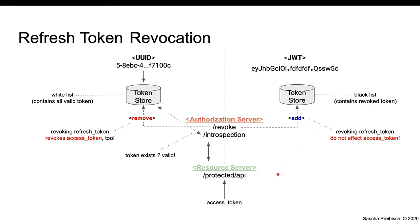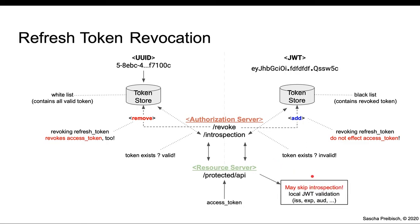Now if an access token is received for the protected endpoint, the resource server sends it to the introspection endpoint, which checks against the token storage. In this case, if the token exists in the blacklist, it's an invalid request. What may happen in this scenario is that a resource server doesn't use the introspection endpoint — it simply validates the JSON Web Token locally, which it can. In this case, it will not know if the token has been revoked. So if you want to support revocation, you have to build a contract that the resource server always takes the token to the introspection endpoint to get it validated against a revocation list — if revocation is supported at all, which is not always the case.